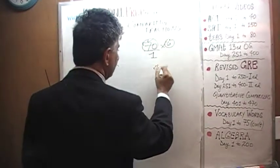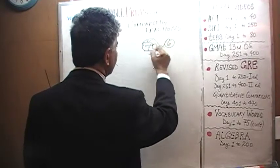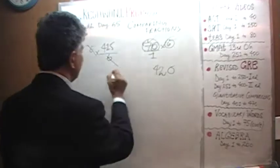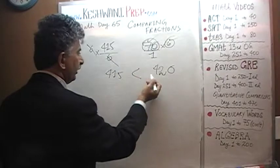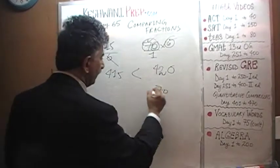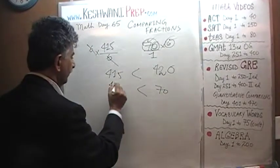7 times 6 is 42. 7 times 6 is 42 and then let's take a 0. 420 versus 415. 420 of course is bigger. Therefore 70 is more than 415 over 6.